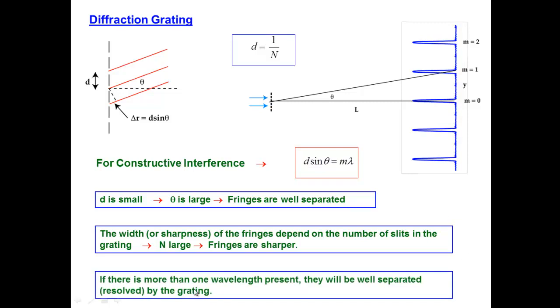So if there's more than one wavelength present, then the effect of a small d and a large n is that the locations on the screen where you will see the interference maxima for those different wavelengths will be well-separated or well-resolved by the grating.